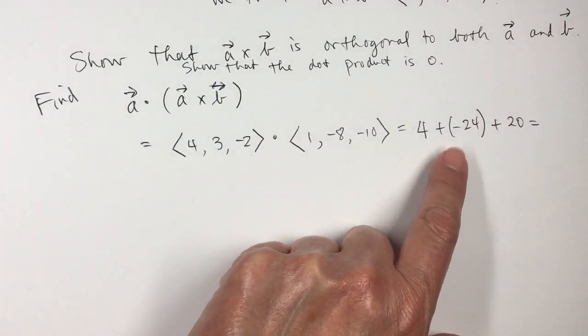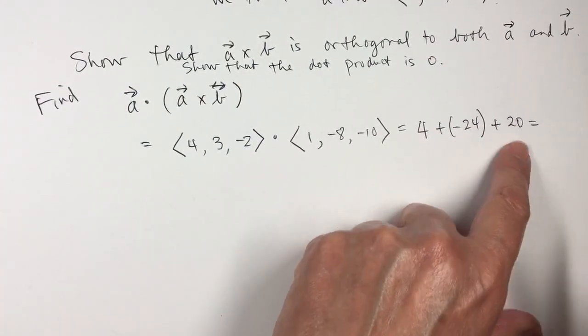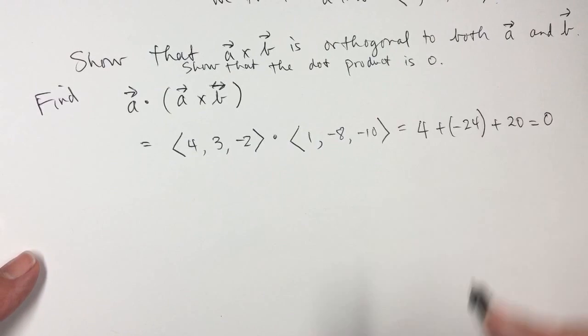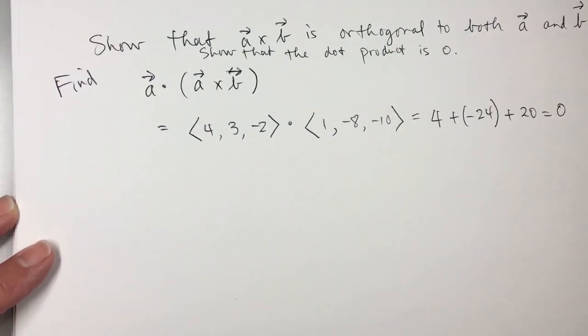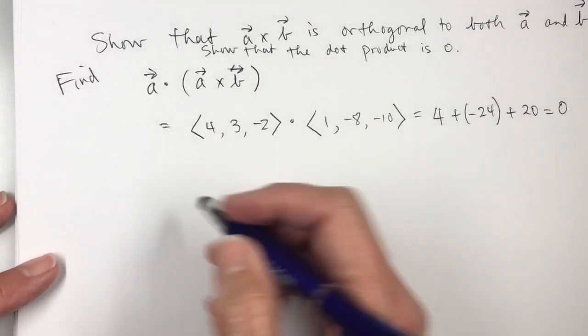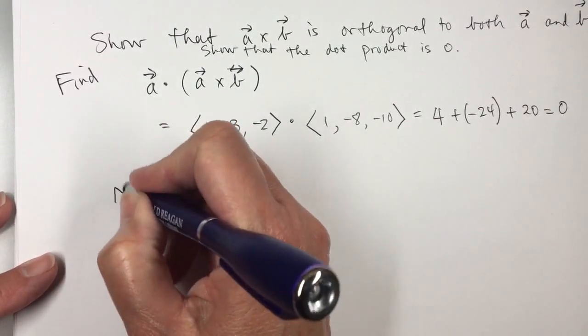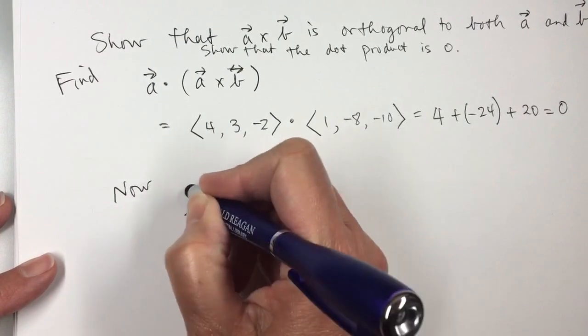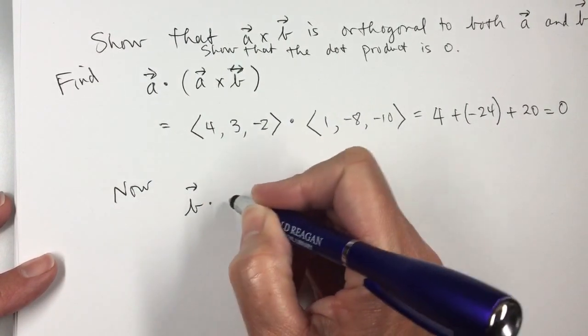So if we add 4 plus negative 24 plus 20, I'm going to get, I'll get 0. So that shows that A is perpendicular to A cross B. For the other one, since it said show it's perpendicular to both vectors,